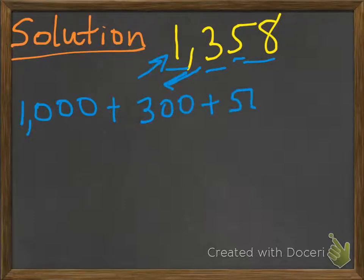Plus 50, that's that one, and then plus 8. That's what we call expanded form.